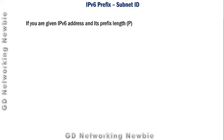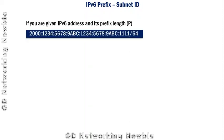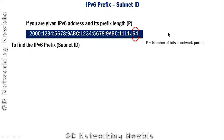Now for understanding, suppose you are given an IPv6 address and its prefix length and you have to find the subnet ID for that IPv6 address. As a practice problem, we have been given an IPv6 address with a prefix length. To find the IPv6 prefix ID or subnet ID, we first identify the prefix length, which is 64 — the number of bits in the network portion.